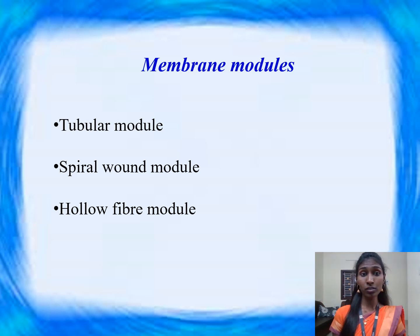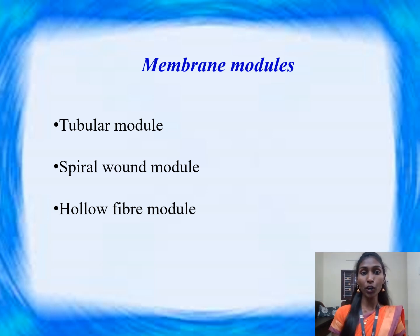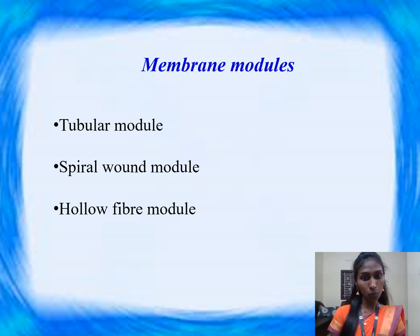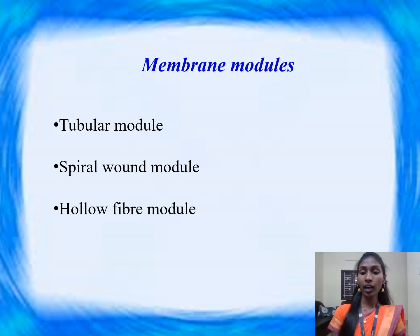Without membrane modules, the membrane separation process will not take place. There are three modules available in the separation or purification process: one is the tubular module, the second is the spiral wound module, and the third is the hollow fiber module.